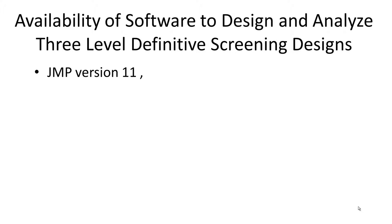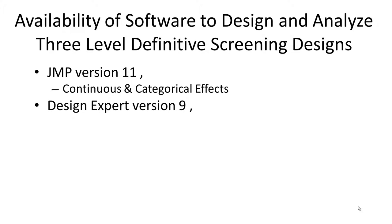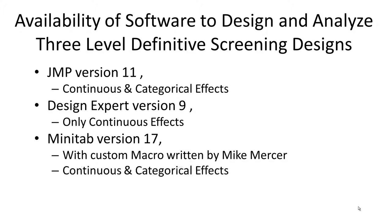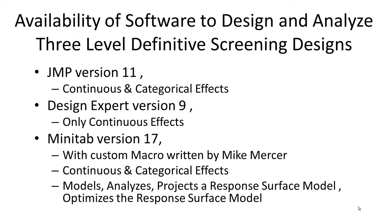The software available for this includes JMP version 11, which allows for continuous and categorical effects; Design Expert version 9, made right here in the Twin Cities, though it's only good for continuous effects; and Minitab version 17, using a macro I've written. That macro allows continuous and categorical effects and lets you model, analyze, and project a response surface model if there are only a few active factors, and then optimize that response surface model.